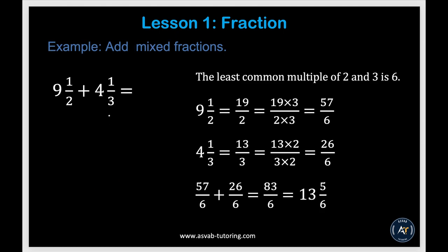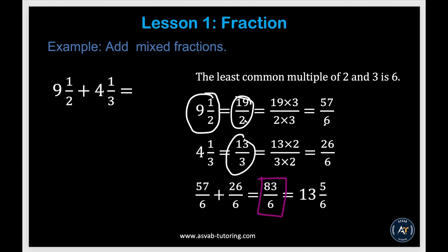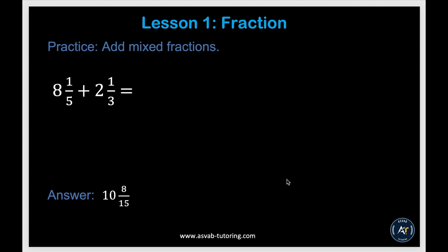Now we'll learn how to add mixed fractions. First, convert each mixed number to an improper fraction: 9 and 1 half becomes 19 over 2, and 4 and 1 third becomes 13 over 3. Find the common denominator — 6. Multiply 19 over 2 by 3 to get 57 over 6, and 13 over 3 by 2 to get 26 over 6. Adding gives 83 over 6, which converts to 13 and 5 over 6. If you don't get the right answer, go back and review the previous example.